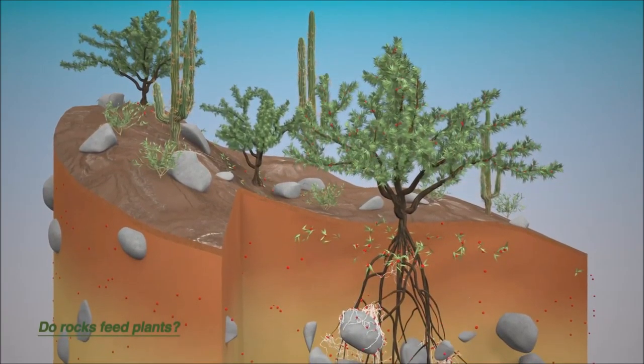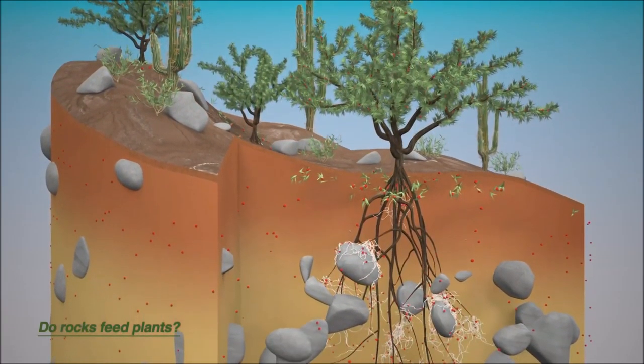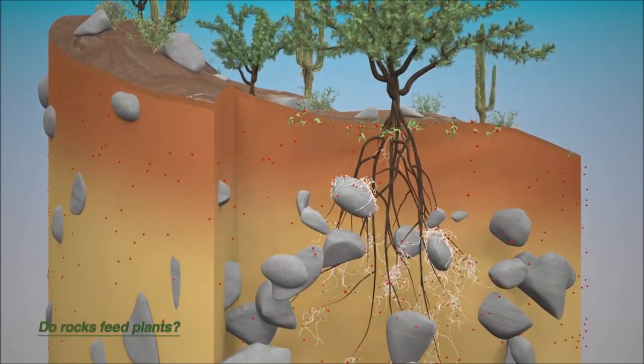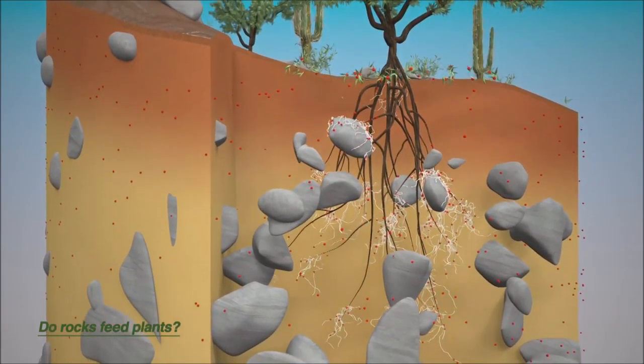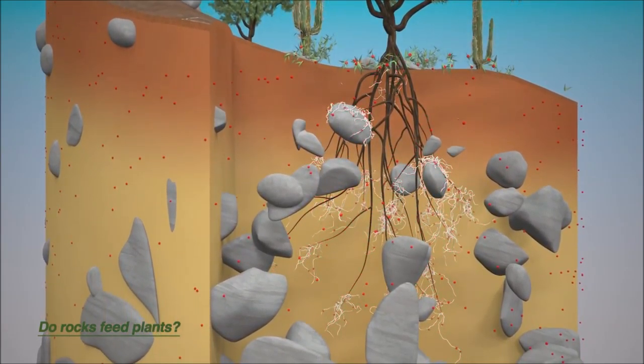This means the fungal hyphae have to find the nutrients deep in the rock. Since there is less vegetation, less carbon is also transferred to roots and fungal hyphae.